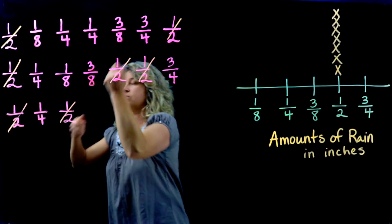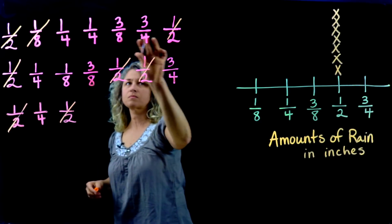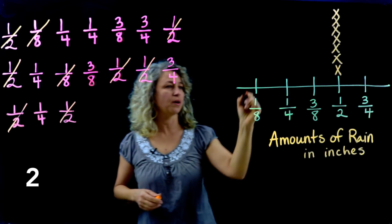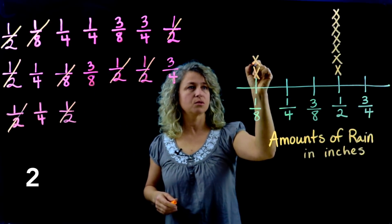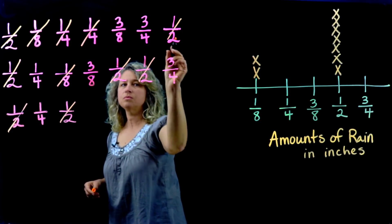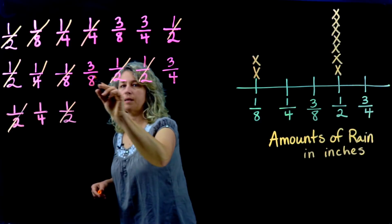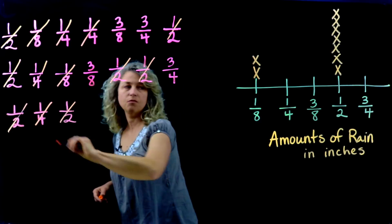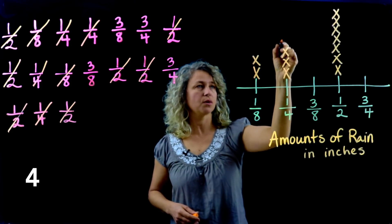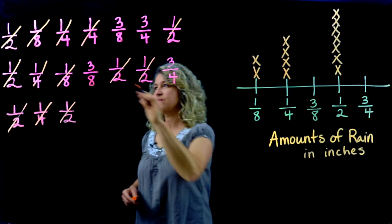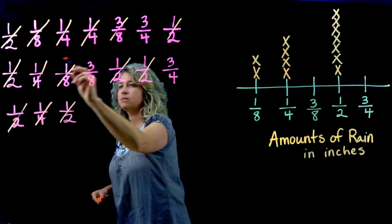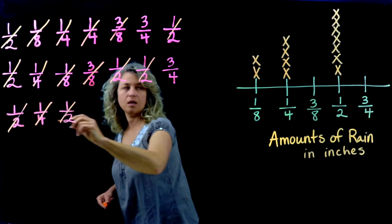Okay, now let's go over and count the eighths. Mark them off: 1, 2. We have two-eighths, two X's. Let's count the fourths: 1, 2, 3, and 4.